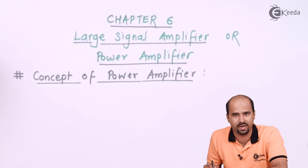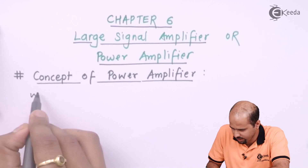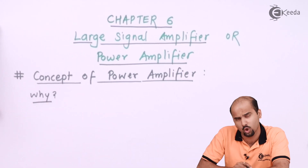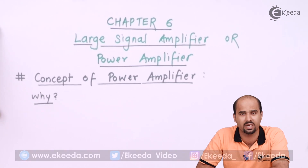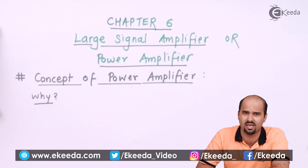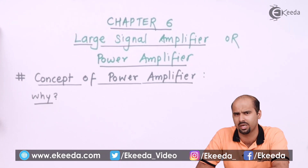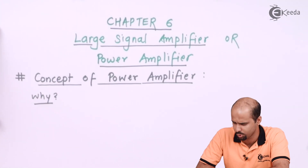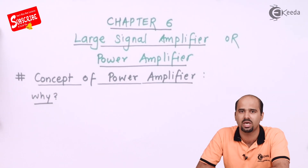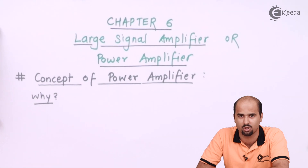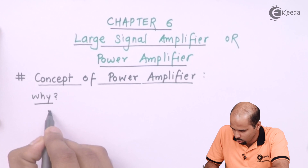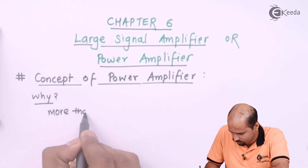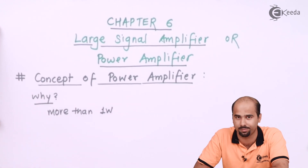The first question is: why do we need a power amplifier when we already have voltage amplifiers like CE, CS, and CB amplifiers? Basically, the need for a power amplifier comes when we want to handle a higher amount of power — specifically, more than one watt of power.